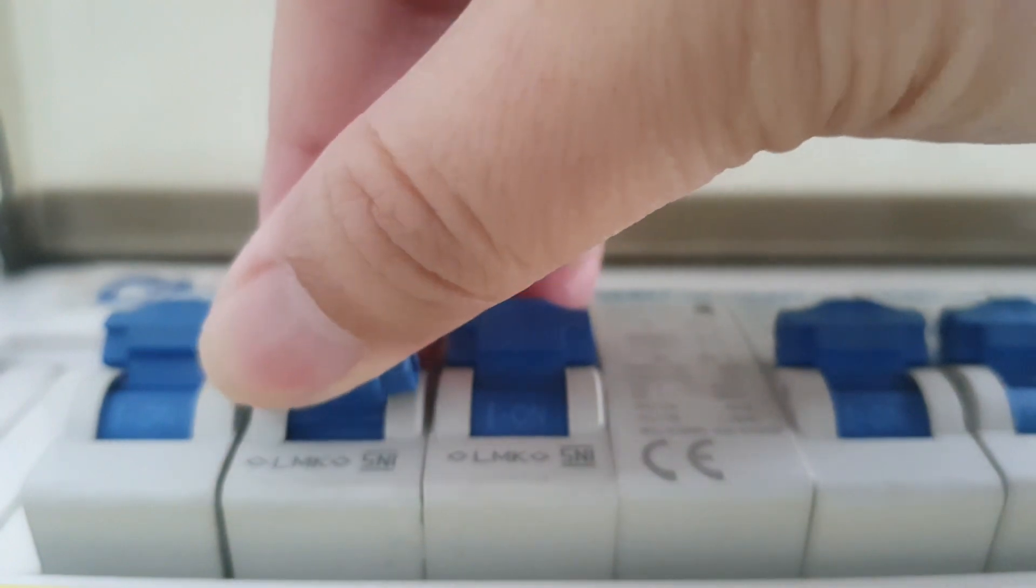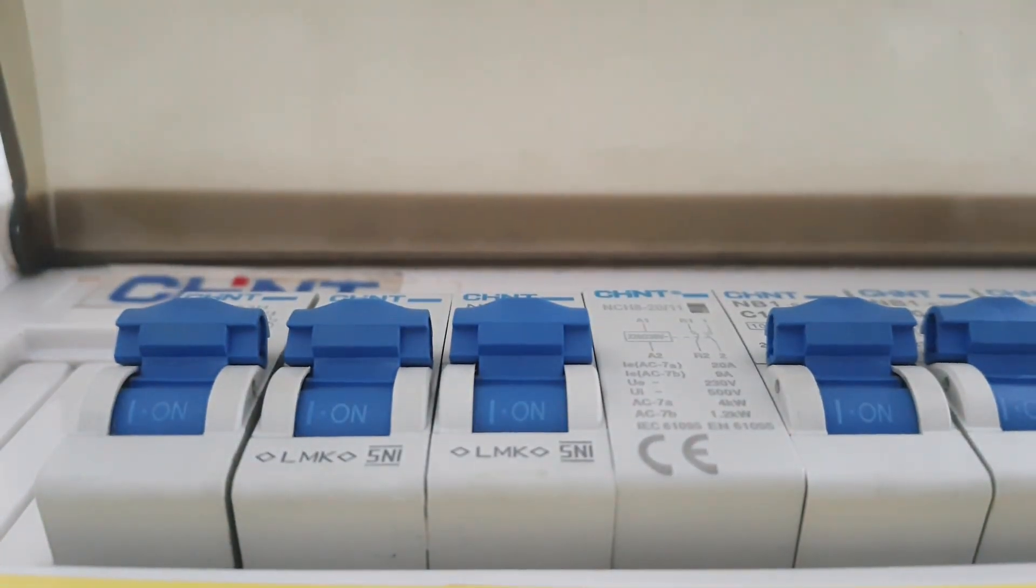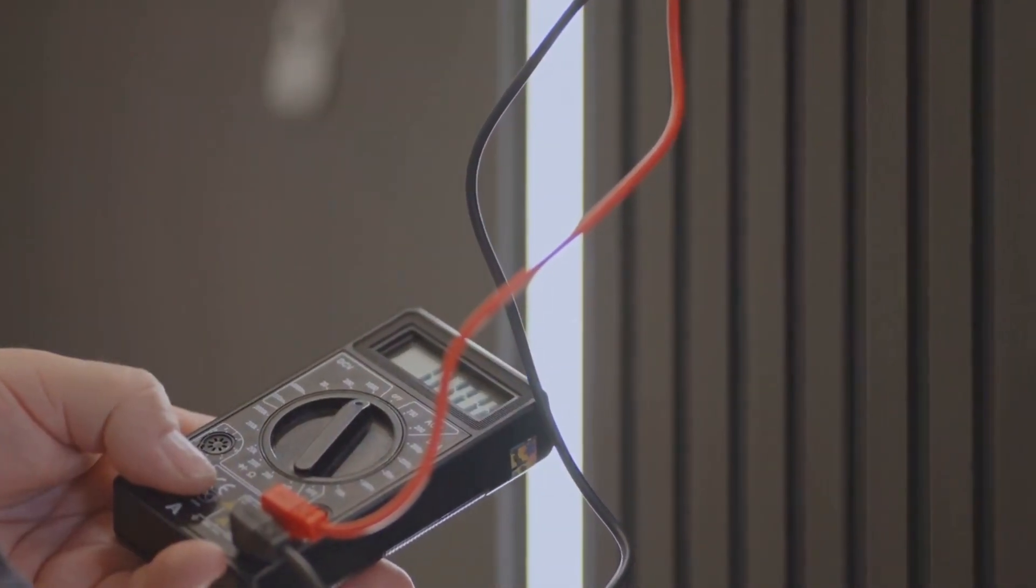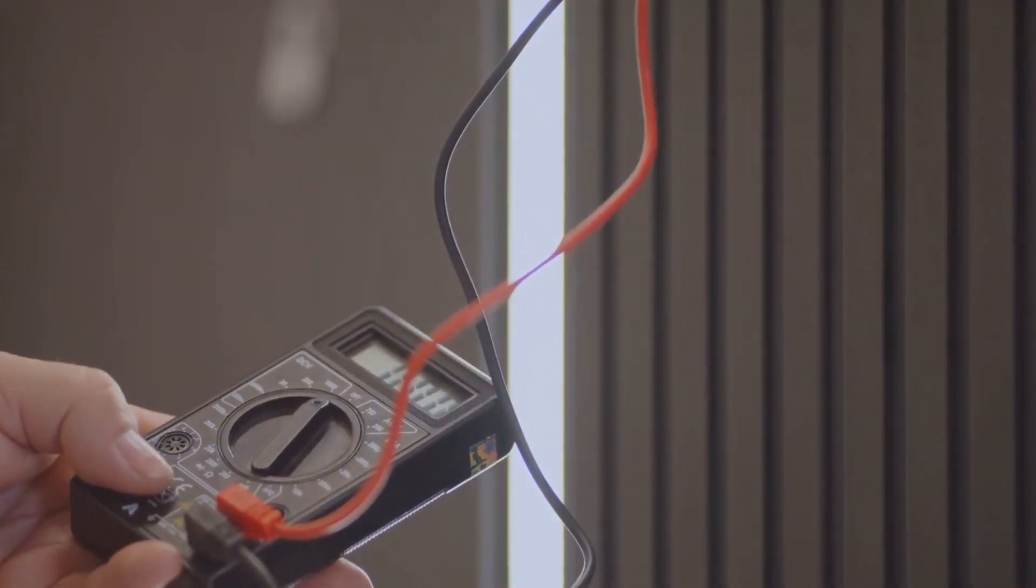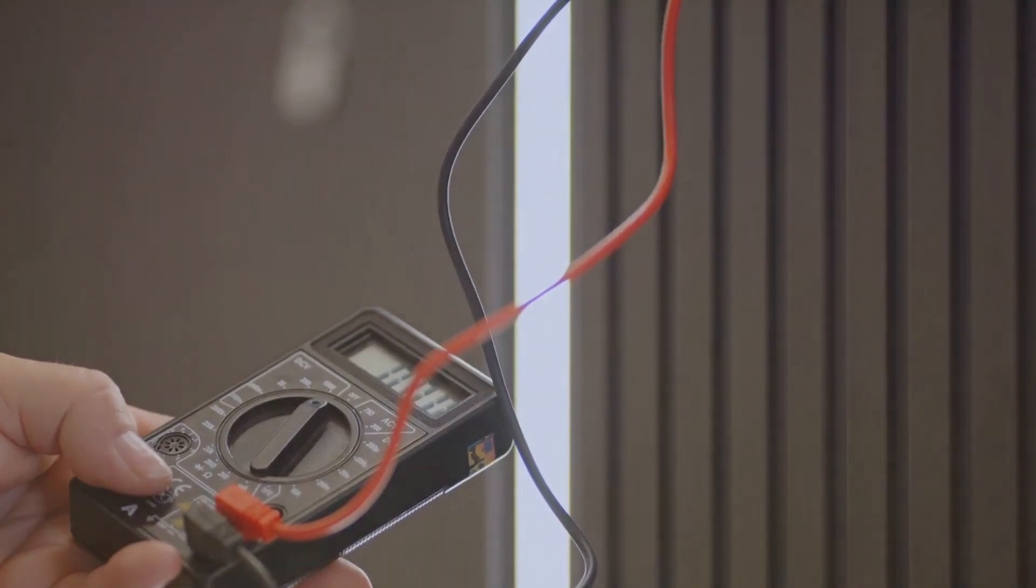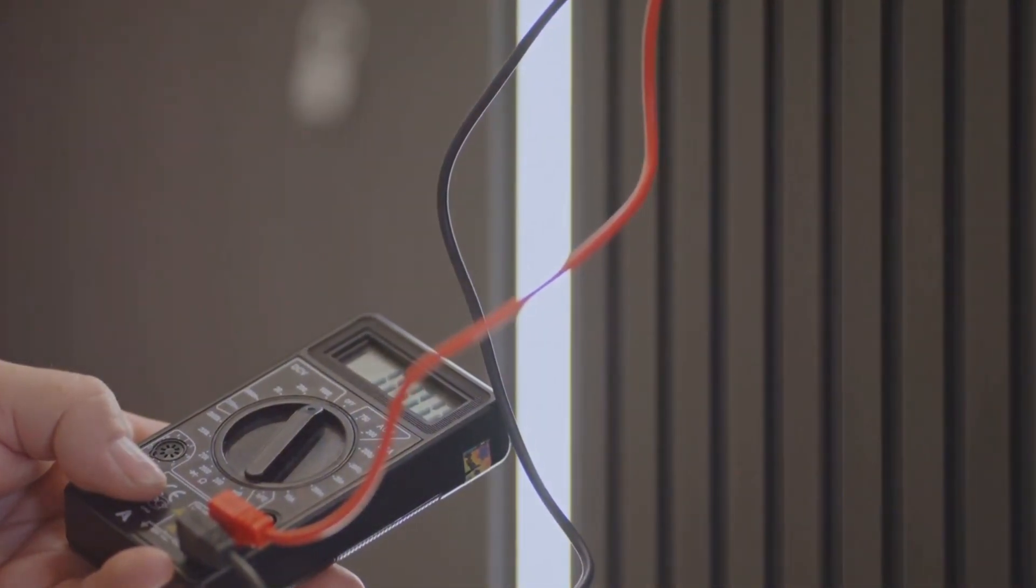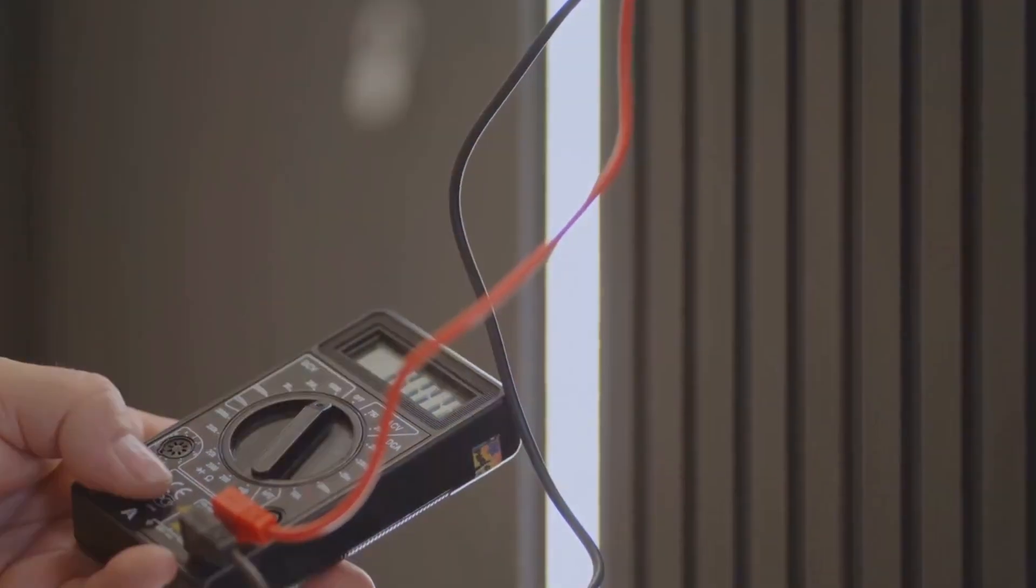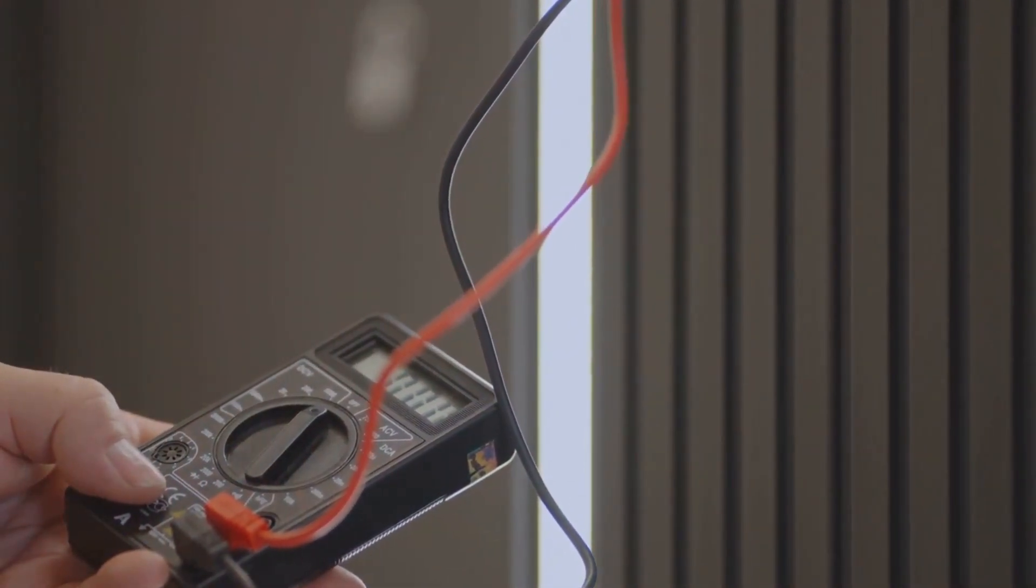The ELCB is a vital gadget in our electrical safety arsenal. It operates mainly on voltage and its primary purpose is to protect against earth leakage currents. These currents may occur when an unexpected flow of electricity finds its way to the ground, often due to faulty appliances or wiring.